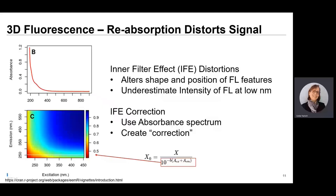The pattern of an EAM can be distorted by the self-absorption of a sample — this is called the inner filter effect. This effect can actually alter the shape and position of fluorescence features in the EAM. The good news is that it can be mostly corrected using the absorbance spectrum of the sample. In this image, the trace labeled B is the absorbance spectrum of a sample, and the matrix labeled C shows the wavelength dependency of the IFE correction. You can see that at the bottom left-hand corner — the low excitation and emission wavelengths — there is significantly more correction than for other areas in the matrix.